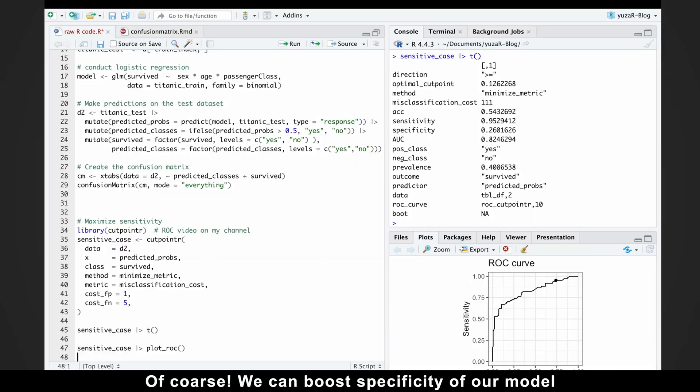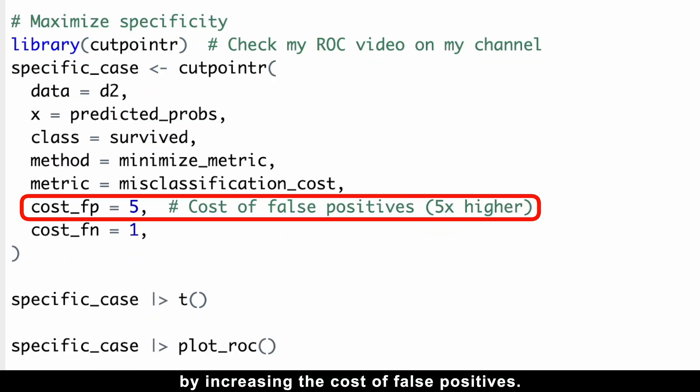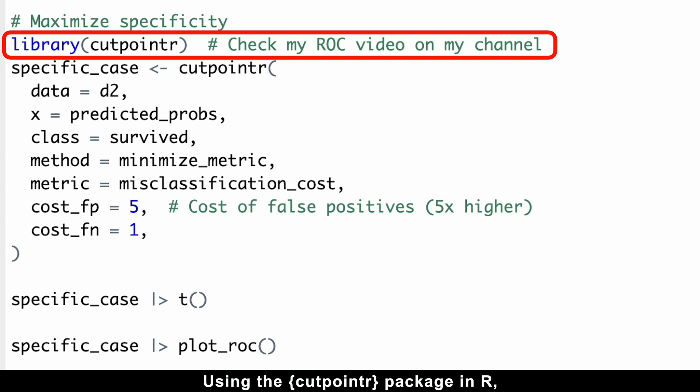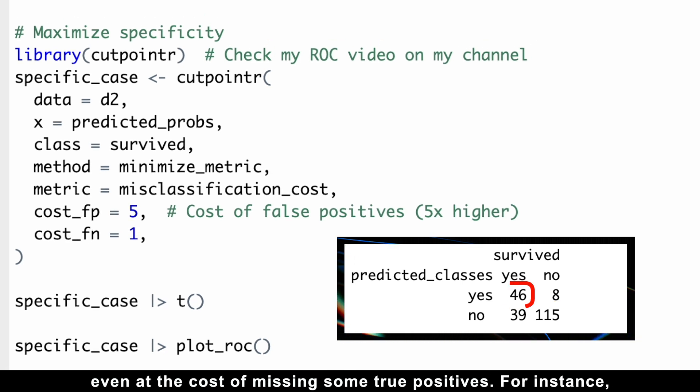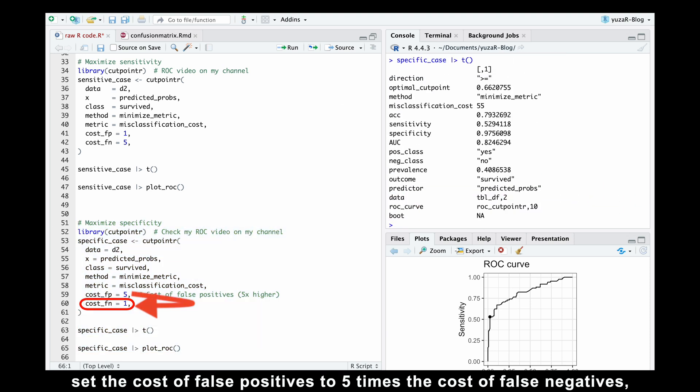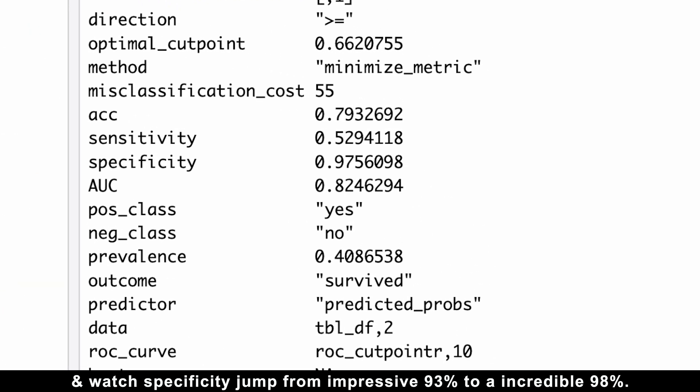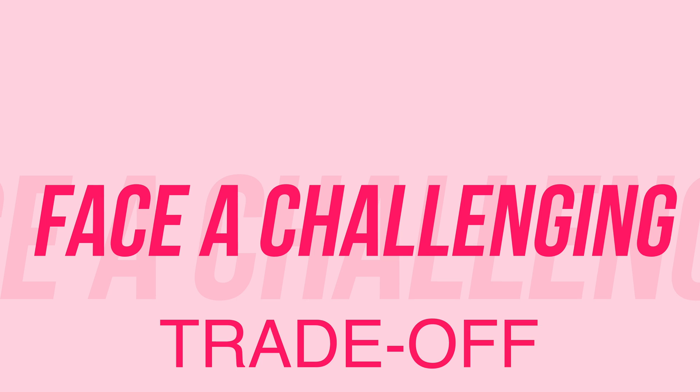Can we do that? Of course, we can boost specificity of our model by increasing the cost of false positives. Using the cutpointer package in R, we can shift the decision threshold to minimize false positives and prioritize true negatives, even at the cost of missing some true positives. For instance, set the cost of false positives to 5 times the cost of false negatives and watch specificity jump from impressive 93% to an incredible 98%. So, as you can see, data scientists face a challenging trade-off.